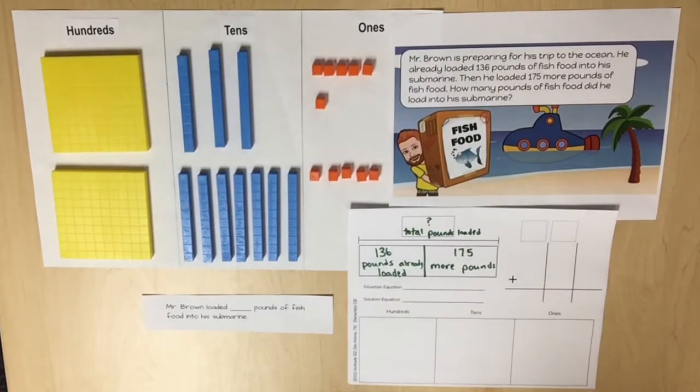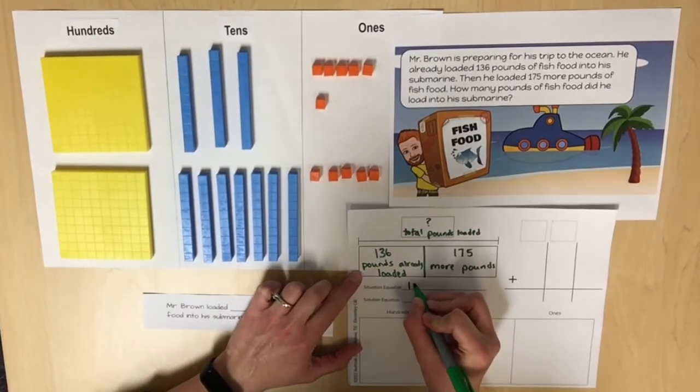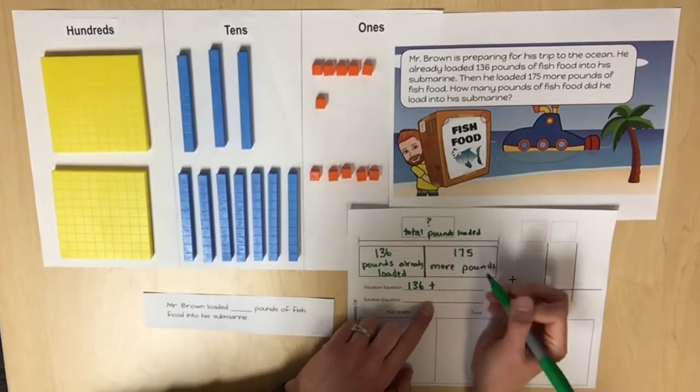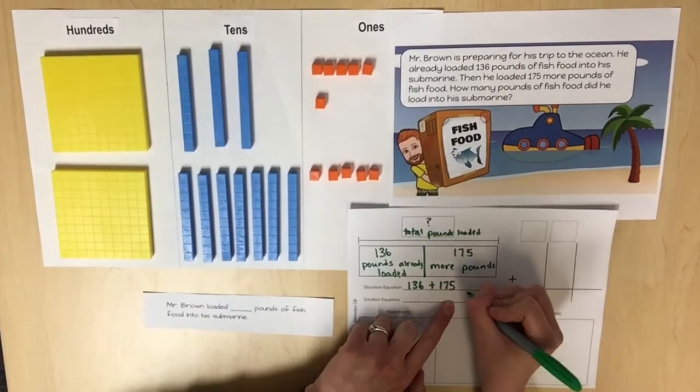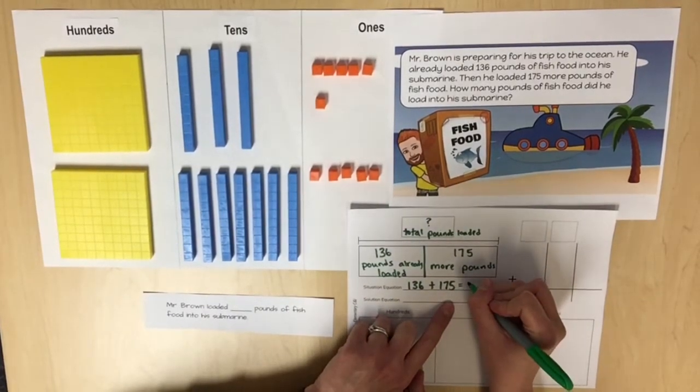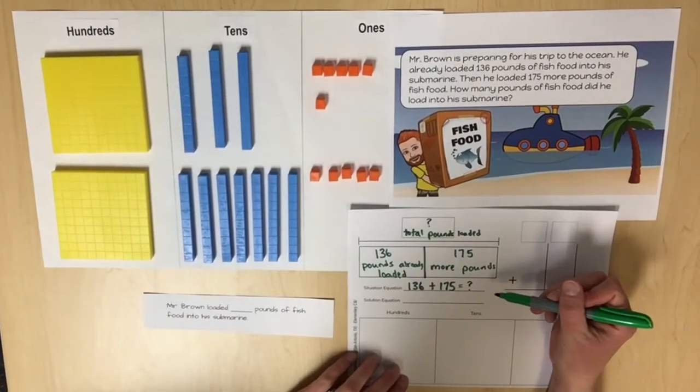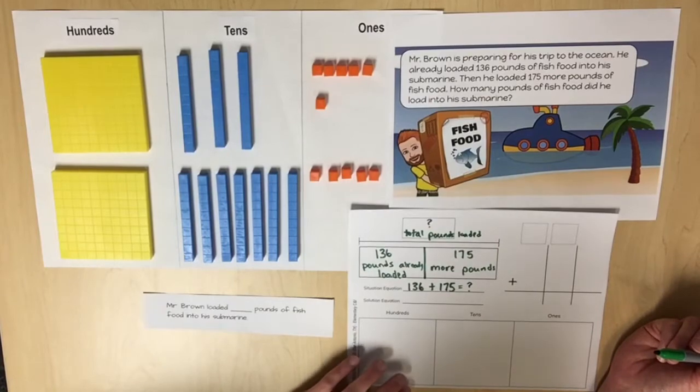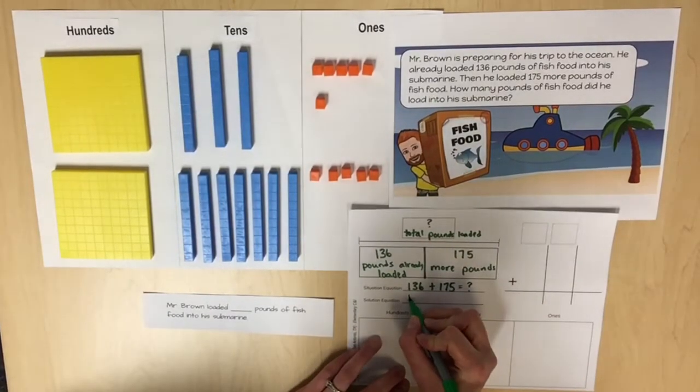Lead students to generate a situation equation: 136 pounds of fish food already loaded at the start, joined with 175 more pounds of fish food equals an unknown total of pounds of fish food that are loaded. That's our result. Because the unknown is already isolated, the solution equation is identical to the situation equation.